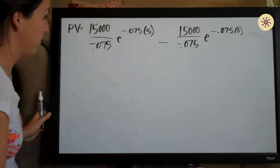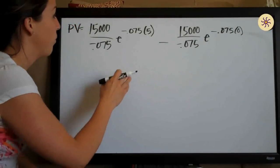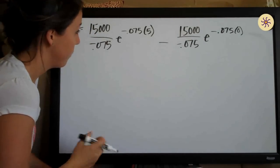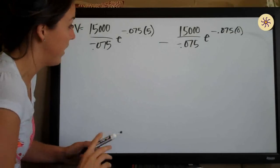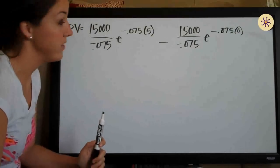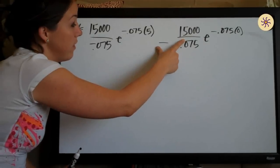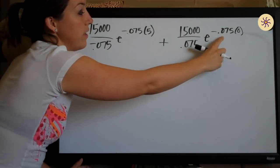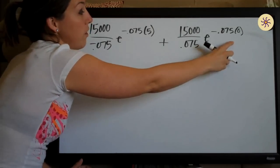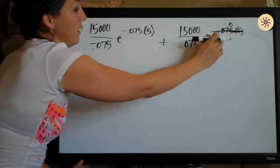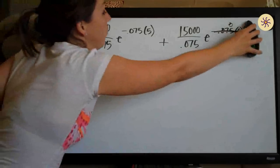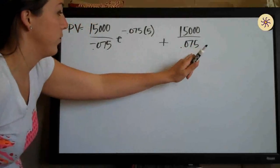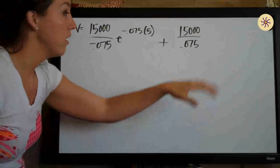Once we've done that, we just simplify. We have a minus and a negative here, so we can remove that negative and make it a plus. Then we have negative 0.075 times zero, which equals zero. Anything raised to the zero power is one, so that entire term goes to 15,000 over 0.075 multiplied by one, which is redundant and can be dropped. So we've simplified and from this point just use your calculator to solve.